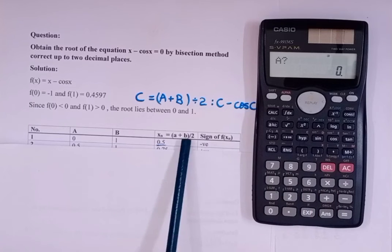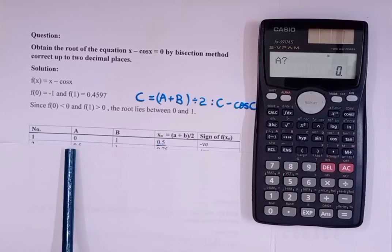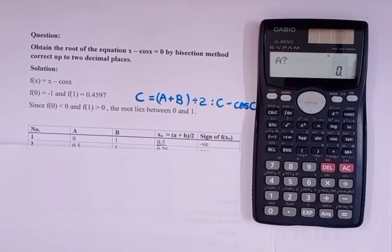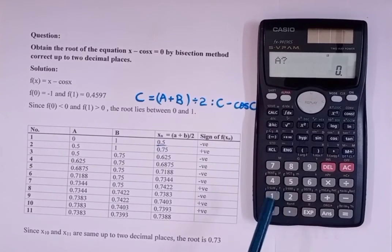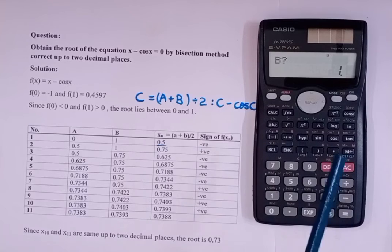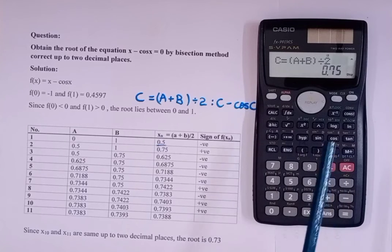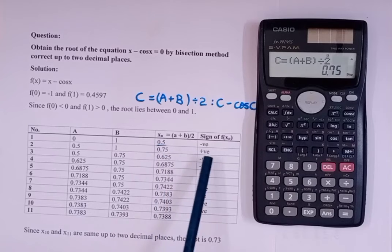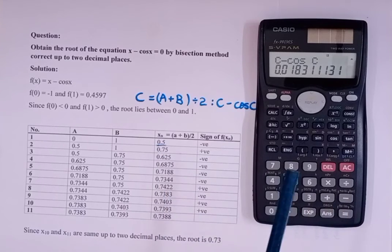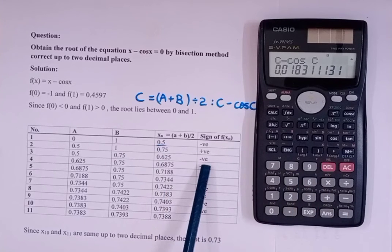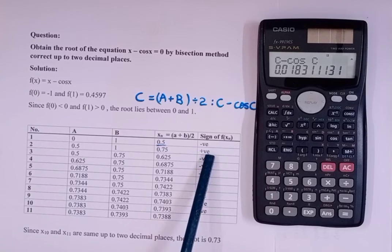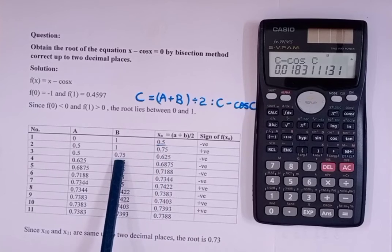Since the sign is negative, we place xn in place of a. So write a = 0.5, press Equal to, b remains 1. We get xn = 0.75. Press Equal to and I get 0.0183, which is positive. Since we got a positive sign, we place the value of xn into b.